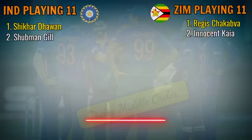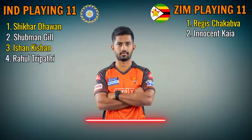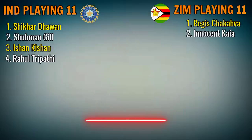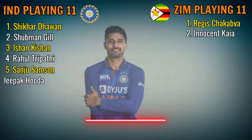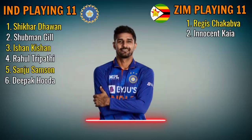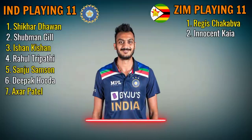India Team Middle Order: No.3 Ishan Kishan, left-handed batsman. No.4 Rahul Tripathi, right-handed batsman. No.5 Sanju Samson, wicket-keeper. No.6 Deepak Hooda, all-rounder. No.7 Axar Patel, all-rounder.